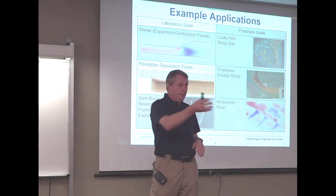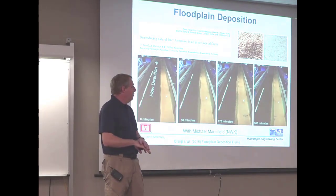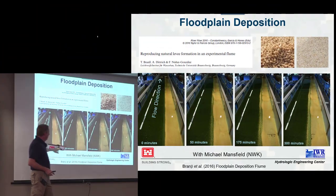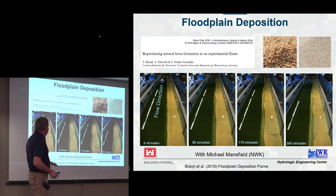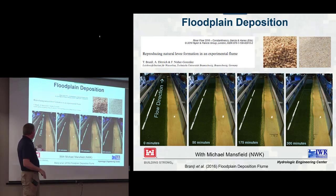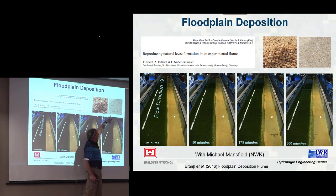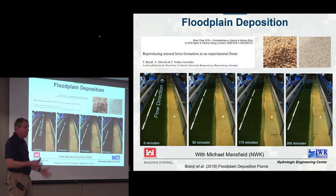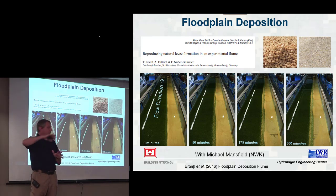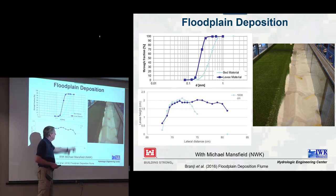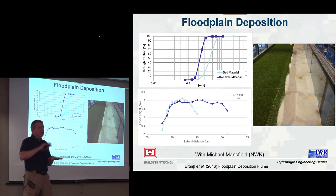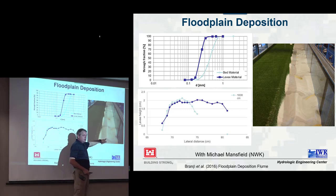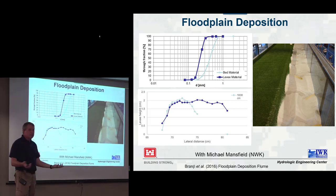The second application is the floodplain deposition flume, run in Germany at a hydraulic lab. They were looking at the role of vegetation on natural levee formation, using astroturf to simulate vegetation. They ran the flume at capacity in the main channel with plastic sediment of specific gravity 1.3 — something we can do in 2D but not yet in 1D. You can put in different specific gravity materials, which is helpful for metals or contaminants.